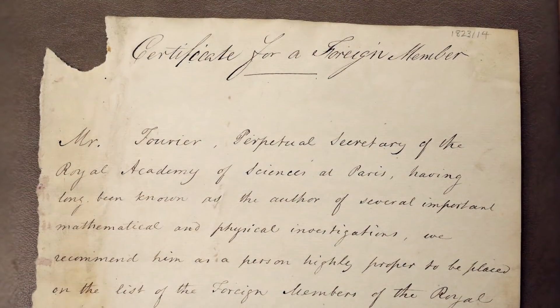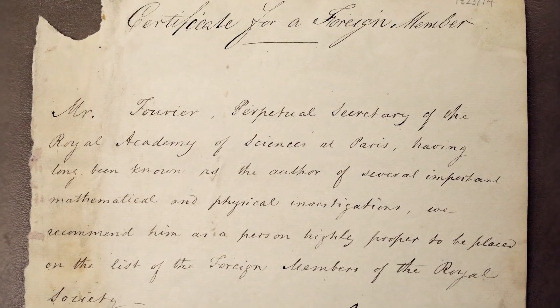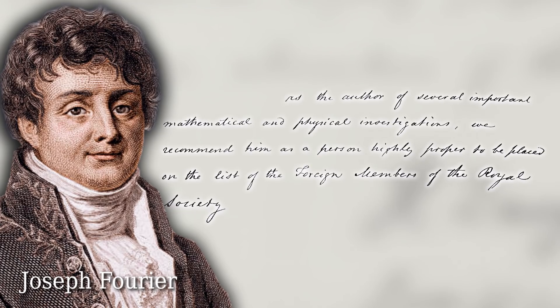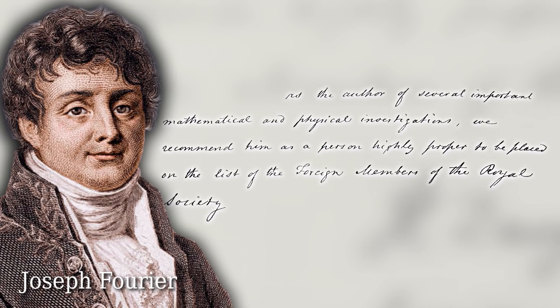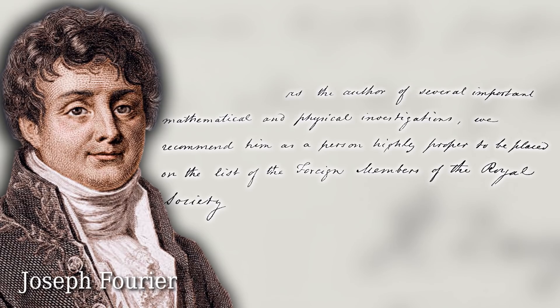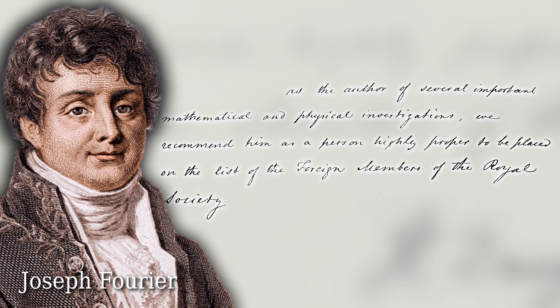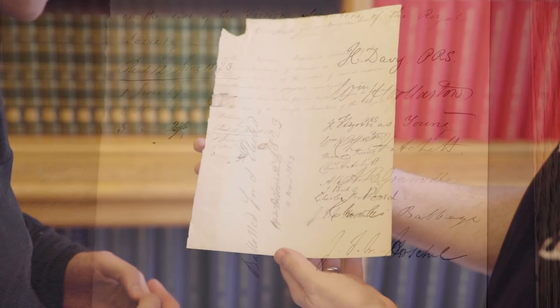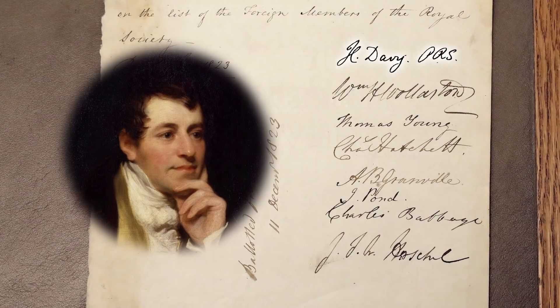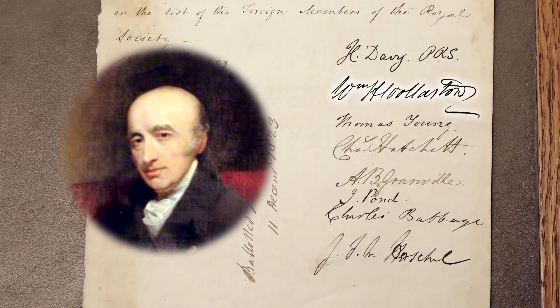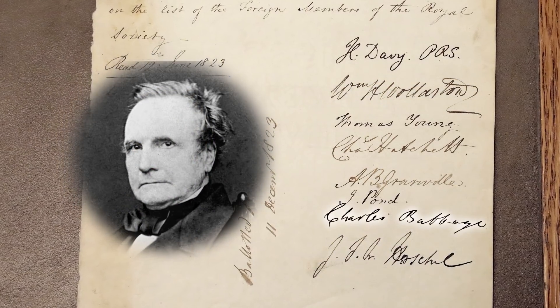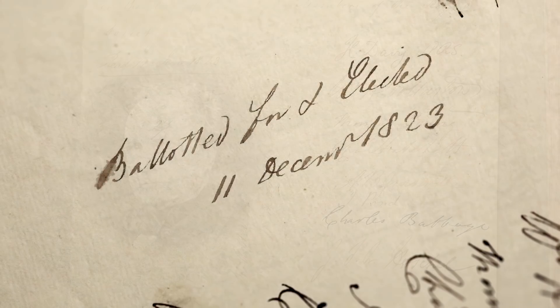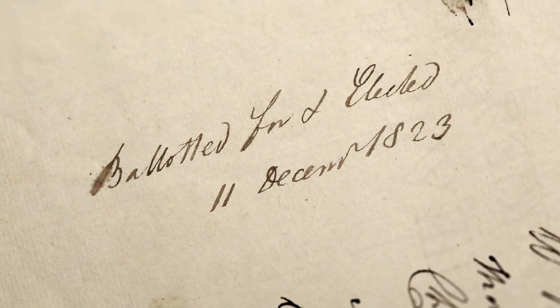Who've we got first? So this is Mr. Fourier. Oh, that's awesome. Perpetual Secretary of the Royal Academy of Sciences in Paris. Having long been known as the author of several important mathematical and physical investigations, we recommend him as a person highly proper to be placed on the list of foreign members of the Royal Society. That feels like a very British understatement. And if we look at the people who've signed under here and vouched for Fourier, who have we got here, Keith? So we've got the president at the top, that's Humphrey Davy, William Hyde Wollison, another chemist just underneath him, John Herschel, Charles Babbage there, of course, he has a certain amount of kudos in mathematical and computer science circles. Certainly. That is a bit of a who's who to have signing for you. 1823, this is.